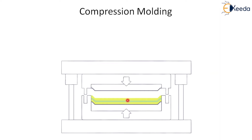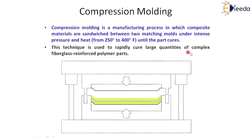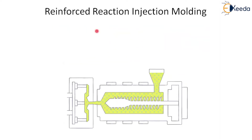Now let me discuss compression molding. Looking at the image, compression is applied from two sides — one plate is fixed and the other plate is moving. In this manufacturing process, composite materials are sandwiched between two matched molds under intense pressure and heat of 250 to 400 degrees centigrade until the part cures. The temperature is an important parameter in compression molding. This technique is generally used to produce large quantities of complex fiberglass reinforced polymer parts.